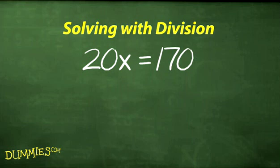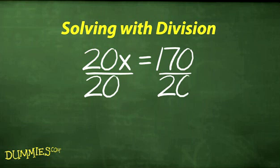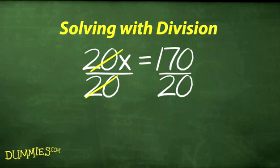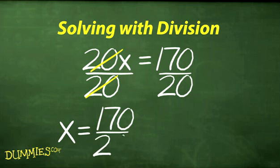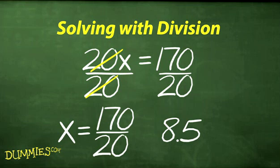Let's solve for the value of x. First, determine the multiplier of the variable and divide both sides by it. In this case, 20. Then reduce both sides of the equal sign. So, x equals 170 over 20, or 8.5.